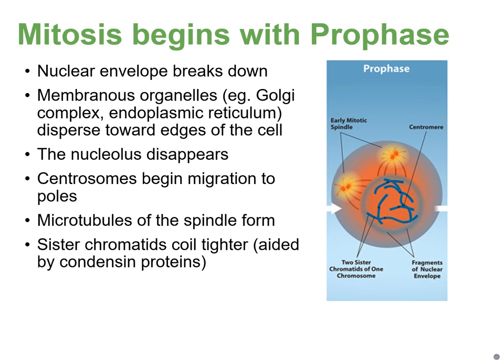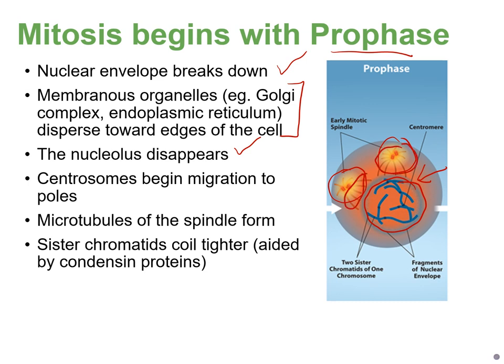Going through the phases again in detail: in prophase, the nuclear envelope breaks down, organelles start moving to opposite ends, the nucleolus disappears, centrosomes migrate to opposite poles, microtubules form coming out of the centrosomes, and sister chromatids coil tighter — they're condensing, aided by condensing proteins.